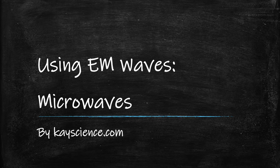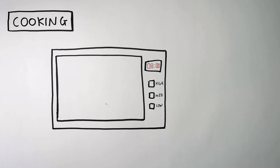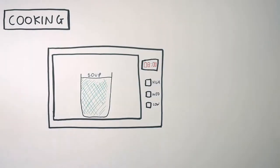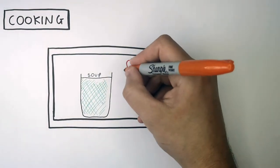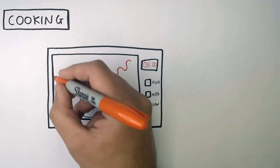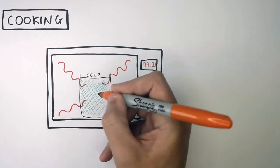Using the electromagnetic wave microwaves by KScience.com. Microwaves are used in cooking, so if you put some soup in the microwave and turn it on, the microwaves are going to transfer energy to the water molecules inside the food.